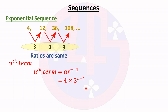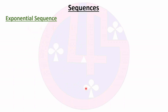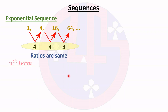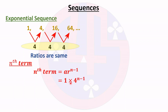The second example is 1, 4, 16, 64. We find the ratio: 4 divided by 1 is 4, 16 divided by 4 is 4, and 64 divided by 16 is 4. All ratios are the same, so this is an exponential sequence. Applying the nth term formula a·r^(n-1), where a equals 1 and r equals 4, we get 1 times 4^(n-1), which simplifies to 4^(n-1).